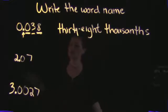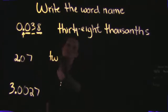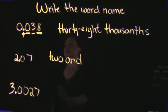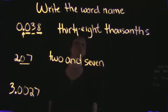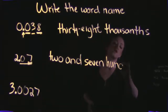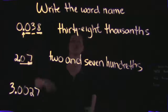Moving on to the second example: 2.07. We do have a number to the left of the decimal — that number is 2. So I'm going to start with 2. Then when we get to the decimal point, we insert the word 'and,' giving us '2 and.' To the right of the decimal, all we have is the number 7, so '2 and 7.' We end with the rightmost place value — the 7 is in the hundredths spot. That gives us 2 and 7 hundredths.